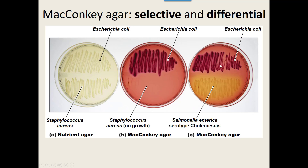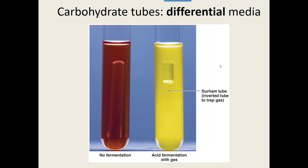Other than plates, we also use tubes and look for color changes for differential media. The original color of the tube is a dark burgundy-brown. What we're looking for is a change in color — it turns a nice bright yellow — indicating the bacteria did something. Sometimes inverted tubes are placed inside to trap any gas bubbles, which is another thing you can look for to see if various organisms produce gas.